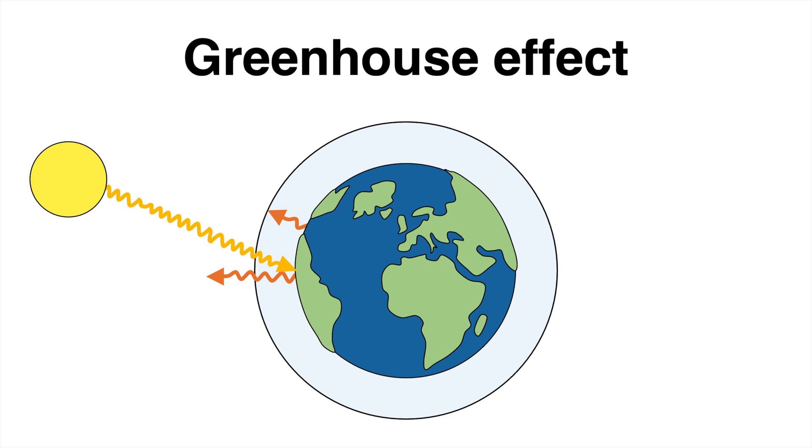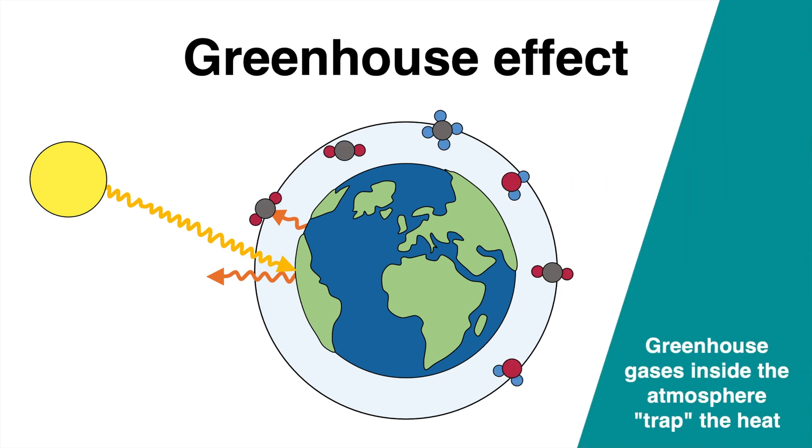The physical barrier of the greenhouse was made of glass. The natural barrier of planet Earth is composed of greenhouse gases located inside the atmosphere.